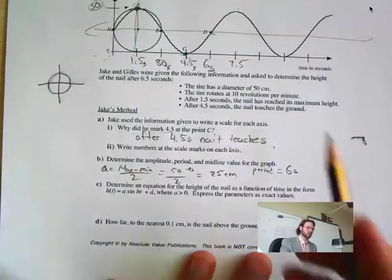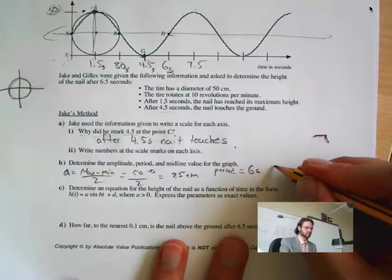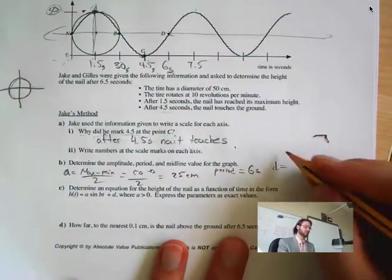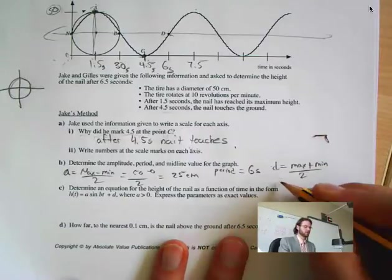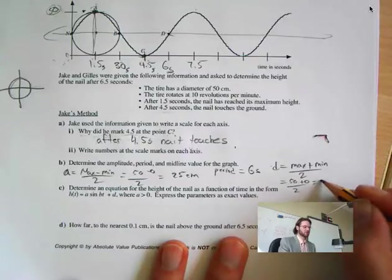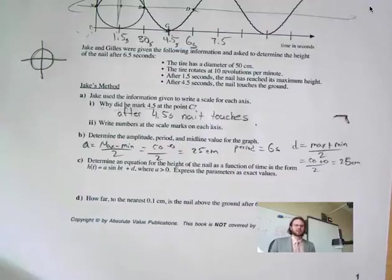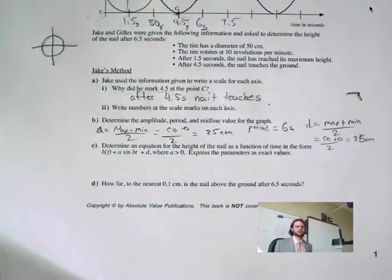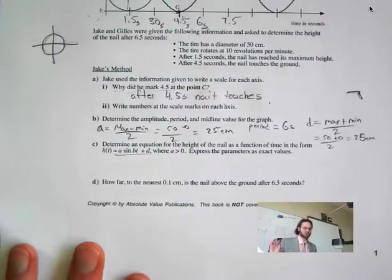My last one is my midline. Midline, my D value, is equal to max plus min divided by 2, which is 50 plus 0 divided by 2, which is equal to 25 centimeters. Now it says determine the equation for the height of the nail as a function. We're just using it this way. No phase shift, so we're good.